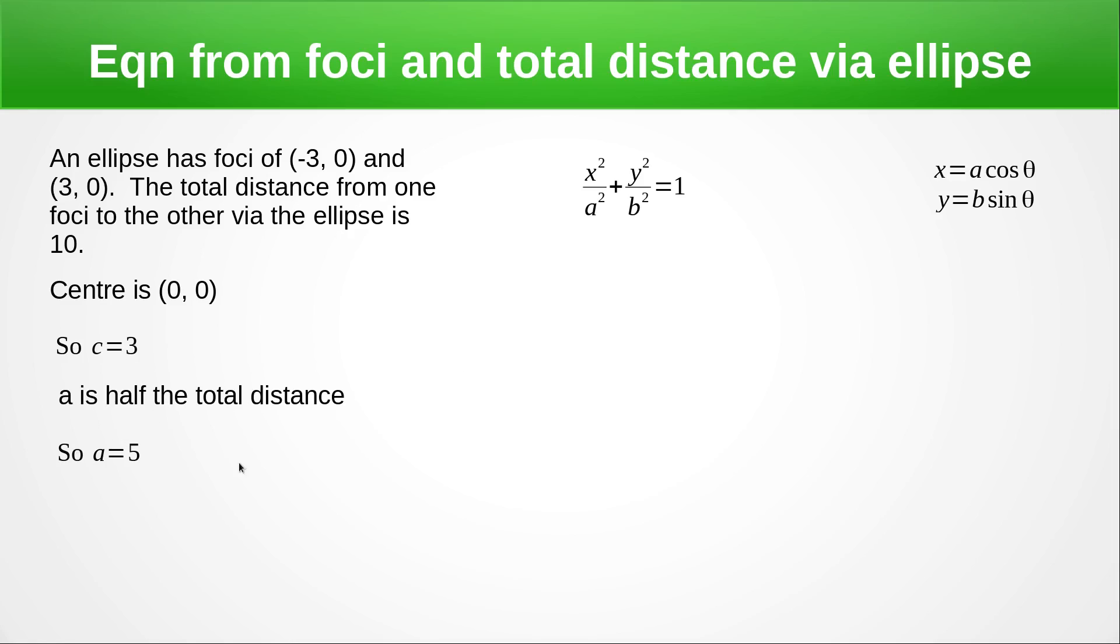And now we've got A and B. We're going to use that same form that we used before. And we end up with B equals 4, a nice Pythagorean triple there. We're going to shove those values of A and B into this formula. And we're going to shove that value of A and B into this pair of equations here to get our equation in parametric form.